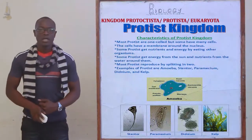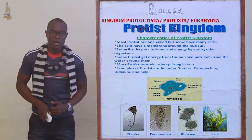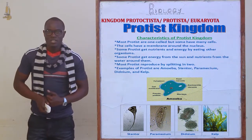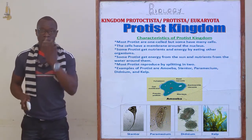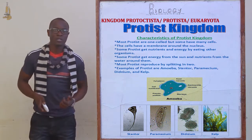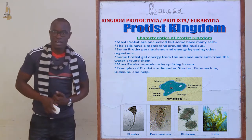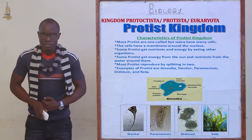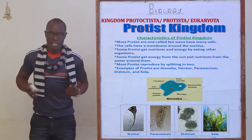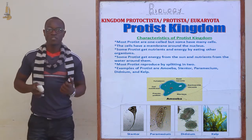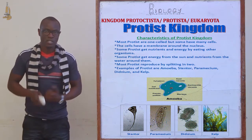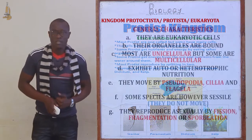Welcome. Now I want us to look at Kingdom Protoctista. For the Kingdom Protoctista, we see that they may include algae and the protozoa. So what are the general characteristics of the organisms under the Kingdom Protoctista?